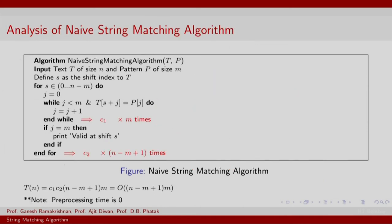Analysis of this naive algorithm, the inner loop is going to be called at max M times, order M times. This is assuming that you have a match at every position.